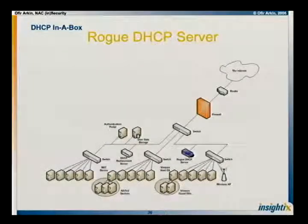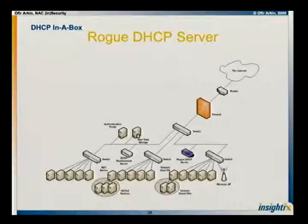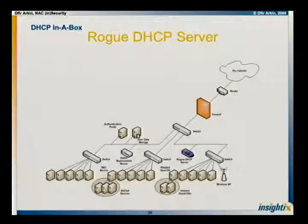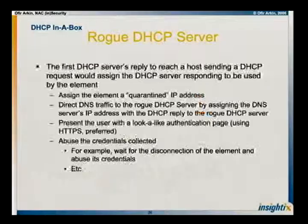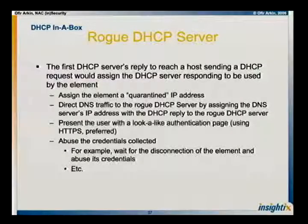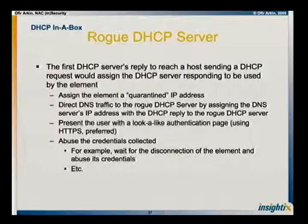The other problem is that it is really trivial to bypass the solution and steal credentials. You all know what a rogue DHCP server is — sometimes guys from QA or R&D install Linux and just set up a DHCP server. We have another rogue DHCP server on the network, and whoever answers first is the one you trust. So what you need to do is put another DHCP server on the network, give the victim a DNS address pointing to you, redirect their traffic to you, capture their credentials, say thank you, and wait until they disconnect to abuse those credentials. Easy — nothing new.